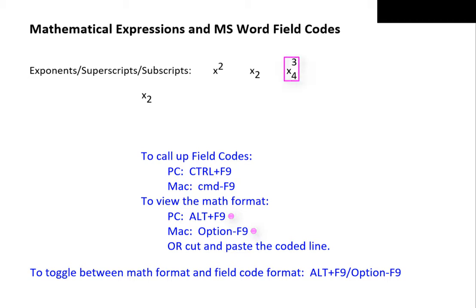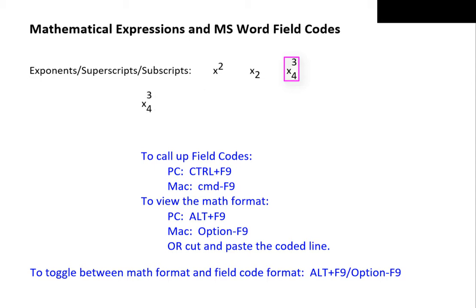To get an expression like x sub 4 cubed, which has both a superscript and a subscript, type x first. Then call up the field code brackets. Type eq, space, backslash, s. This time we don't specify up or down — actually it would not matter. Open parenthesis, first type the exponent 3, then a comma to separate the superscript from the subscript, then the subscript 4. Then a closing parenthesis, cut, and paste to view the math expression.